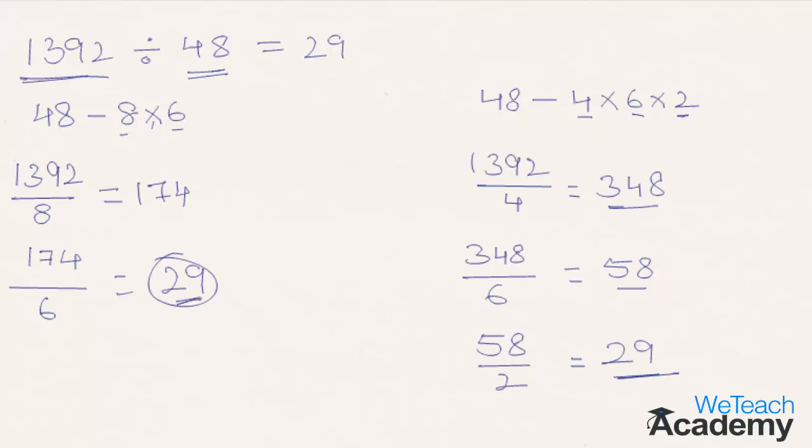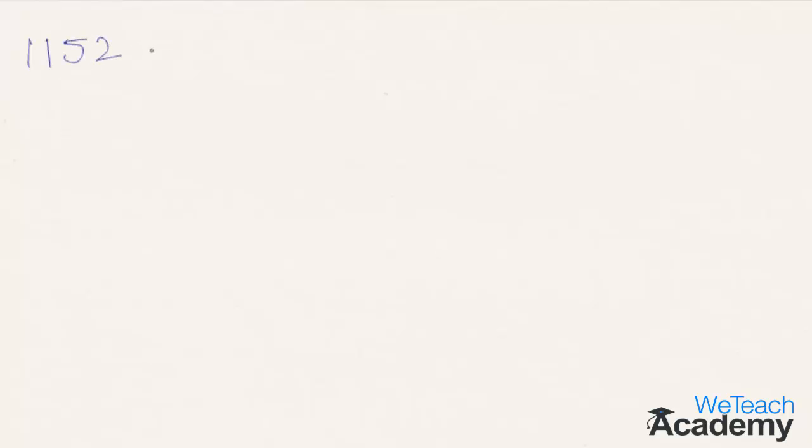You can take any of the methods. You can either take two factors or you can even try with three factors, whichever way you think is easier or simpler. Let's go with some more examples. Let's try 1152 divided by 64.